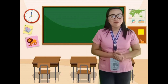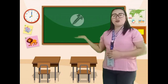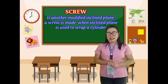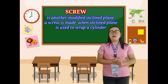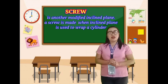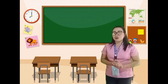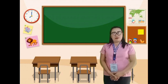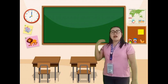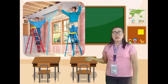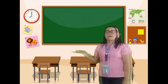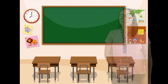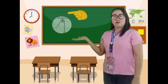Another type of simple machine is the screw. A screw is another modified inclined plane. A screw is made when an inclined plane is wrapped around a cylinder. A screw can be used to lift things or to hold them together, like hanging drywall, installing a cabinet, and attaching a ledger board.